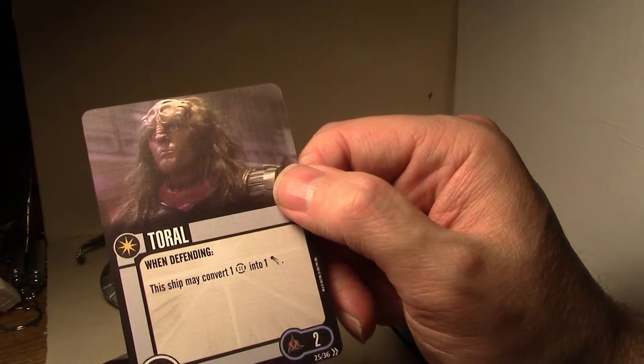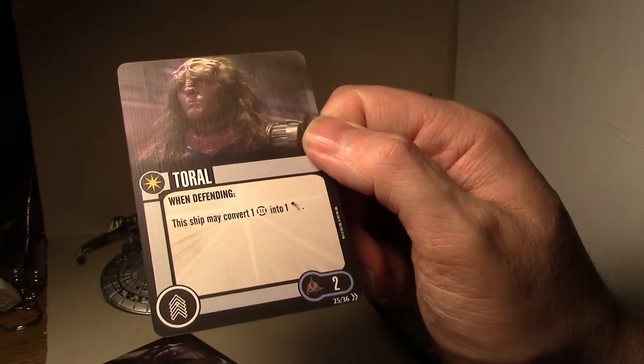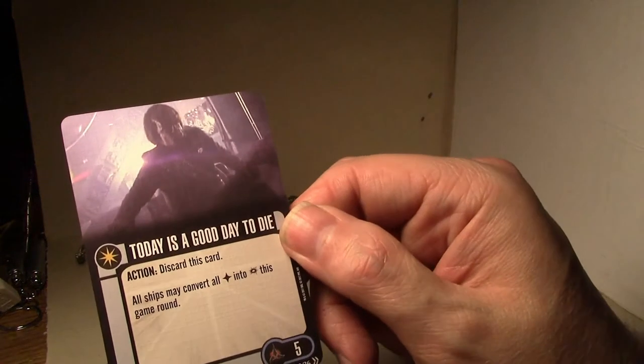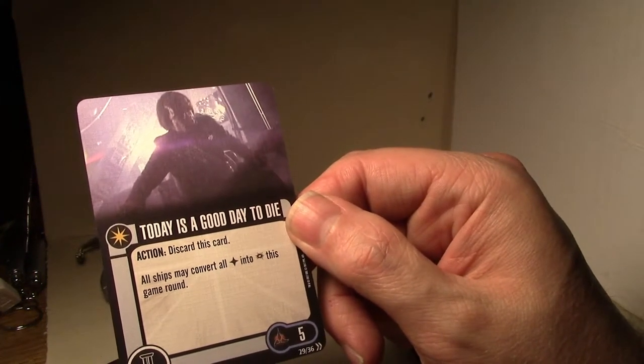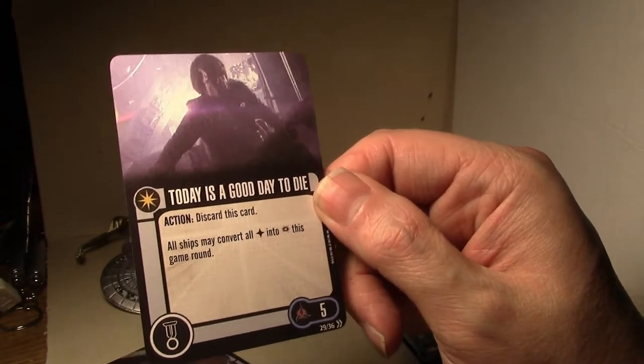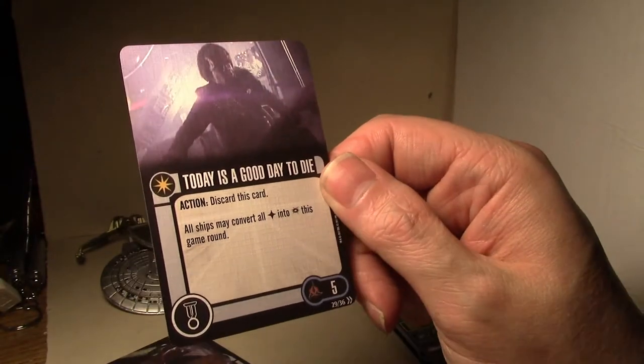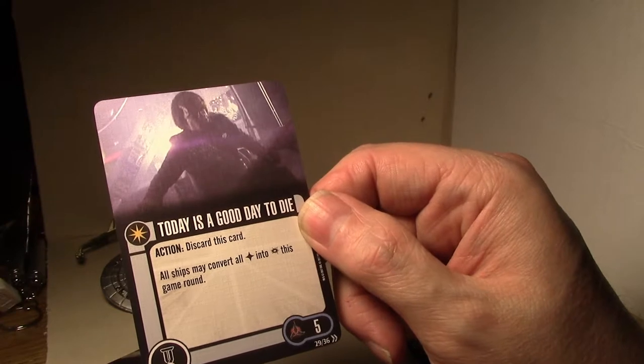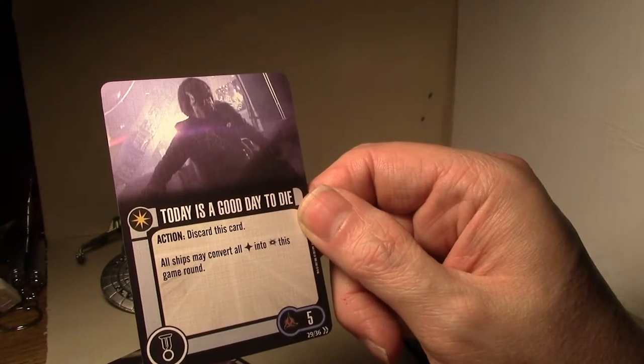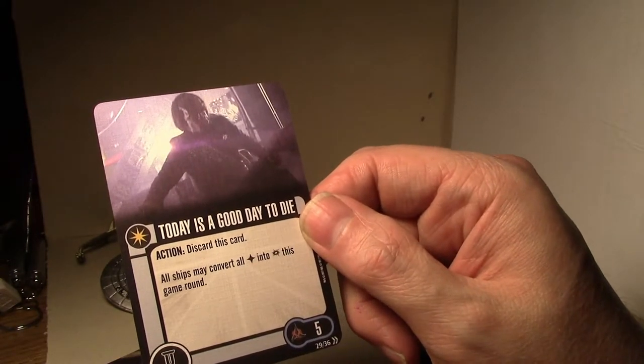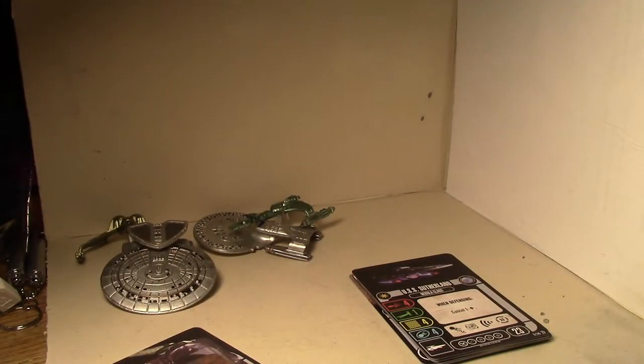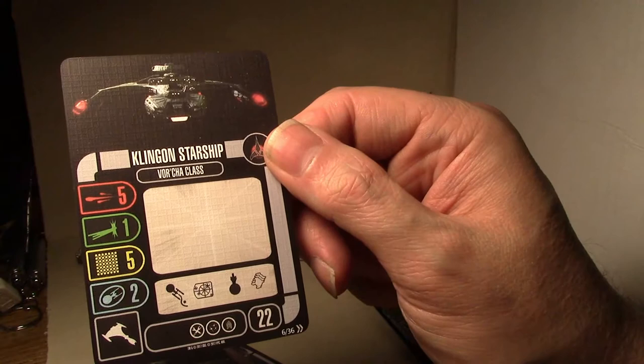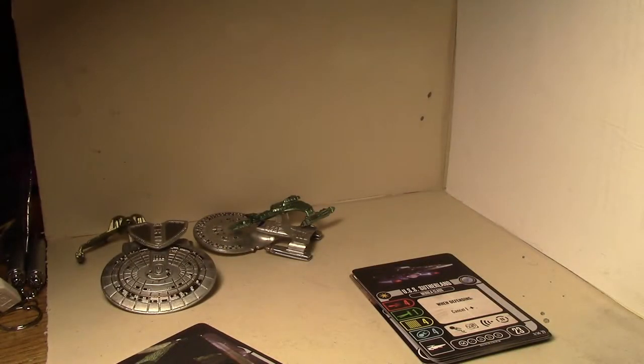Toral. When defending... The ship may convert 1 battle station to 1 evade. For 2 points. Not quite as good as Worf. But on the same vein. Still worth taking. Absolutely worth taking. Today is a good day to die. Action. Discard this card. All ships may convert all hits into crits this game round. This card is pretty clear. It's all ships. No... On both sides. Every single ship. All ships may convert all hits into crits this game round. Not all of your ships. All ships. It is a good... This is... Today is a good day to die. That's what this card does. Kavort class maneuver dial. Generic Vorcha class for 22. Gotta give me some more of this. 22 points for a generic Vorcha is insane. Vorcha class maneuver dial.